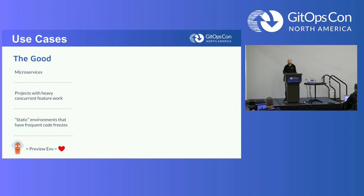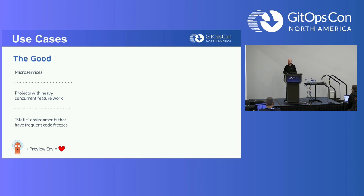If you have projects with heavy concurrent feature work — say, you have 20, 50, or 100 developers all working on features at the same time — we all know that when you get towards the end of a sprint, they're coming in hot. You might have 75-80% of features delivered right at the end. It can become the wild west in integration environments where everything is being merged into the main branch to queue up the release. Preview environments can help you peel off a few key ones: identify, test, and figure out what to resolve before merging into the main feature set.